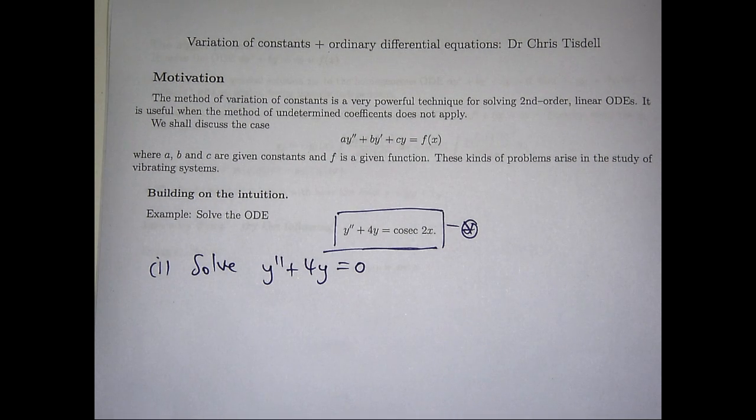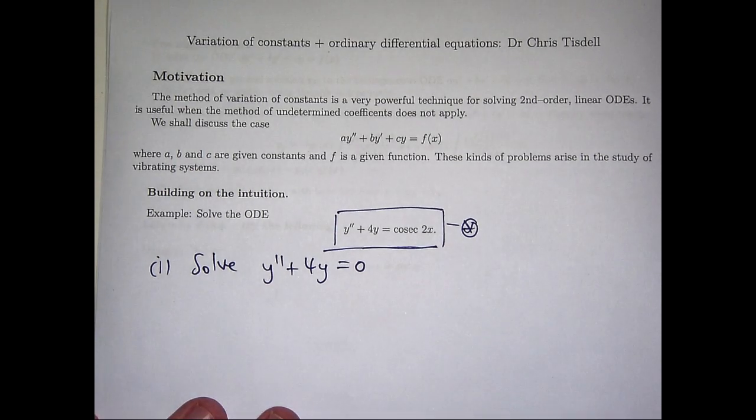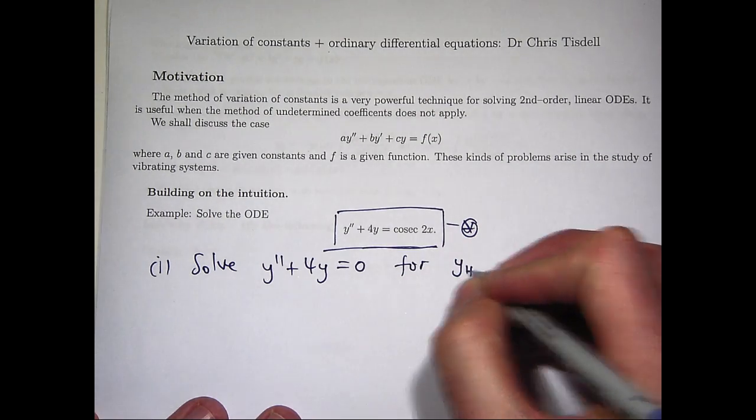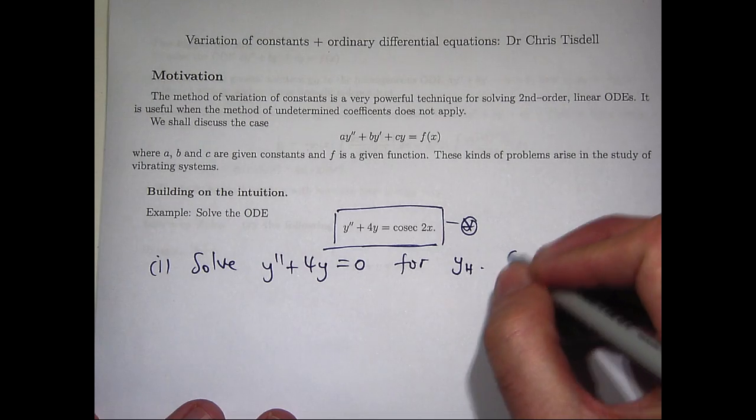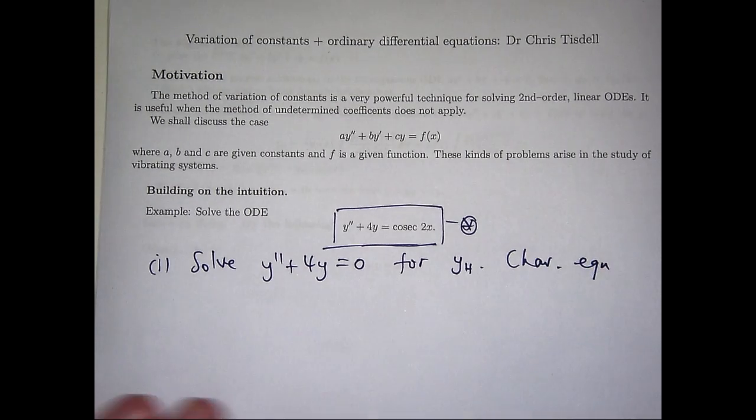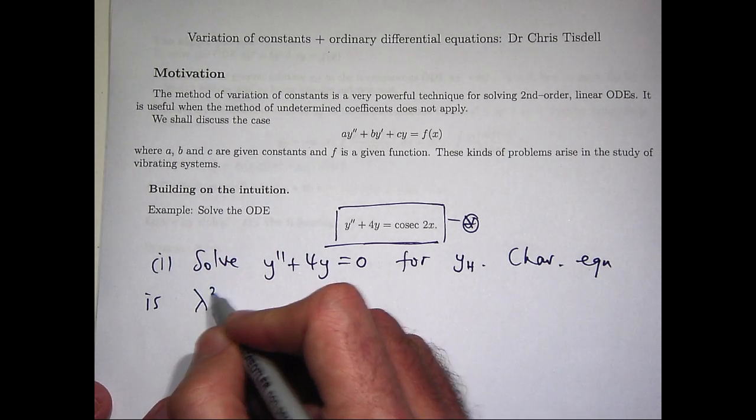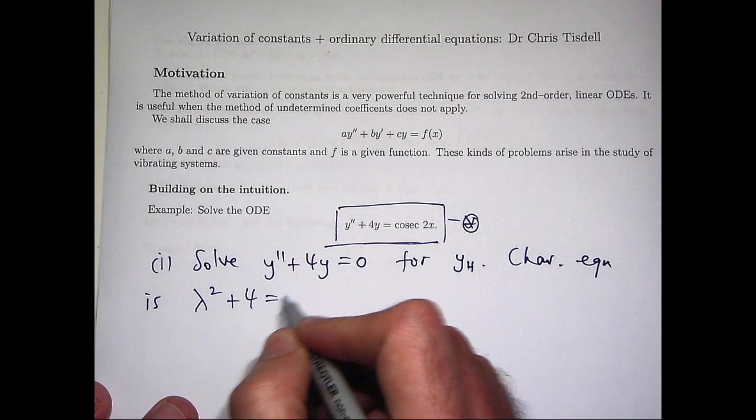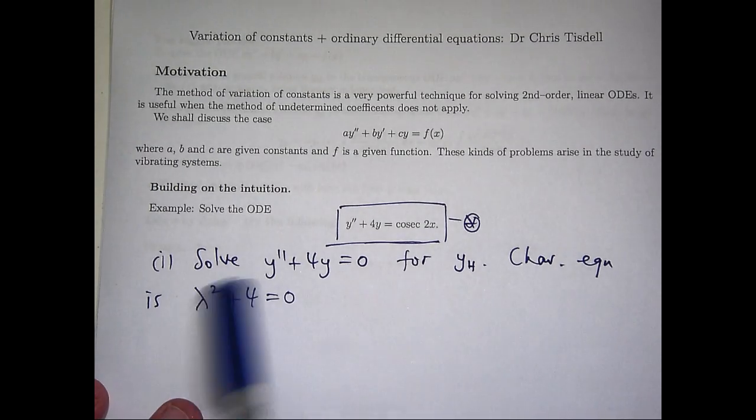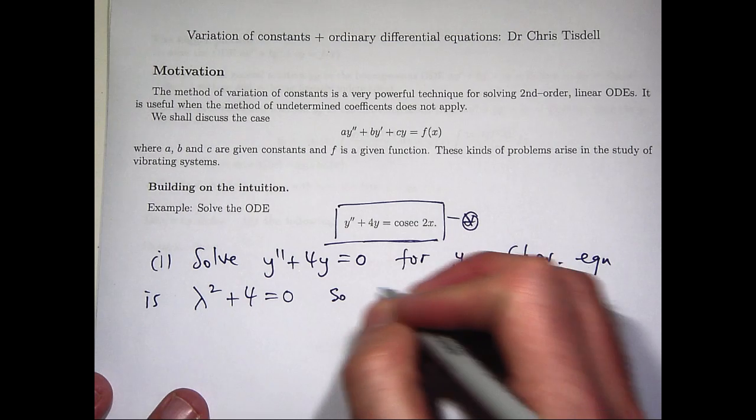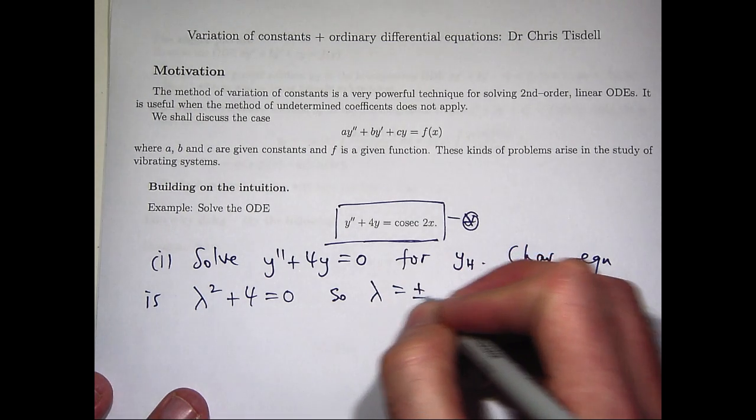You may be able to do it by inspection, but let's just write down the characteristic equation. So it's going to be λ² + 4 = 0. So if I solve this, I'll get complex solutions, and in fact I'll get ±2i.